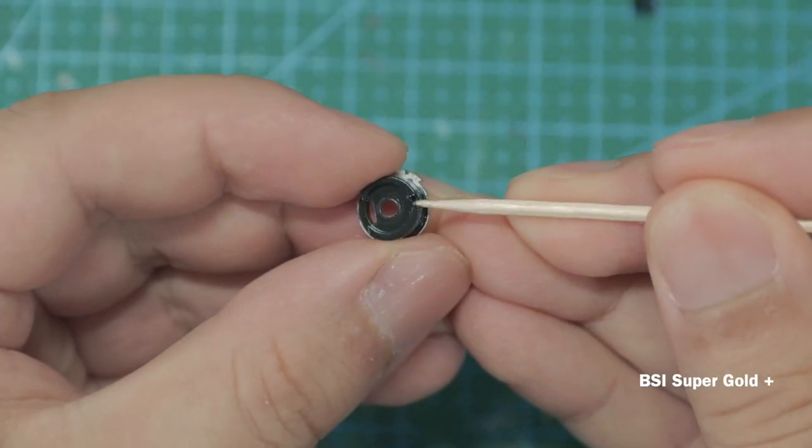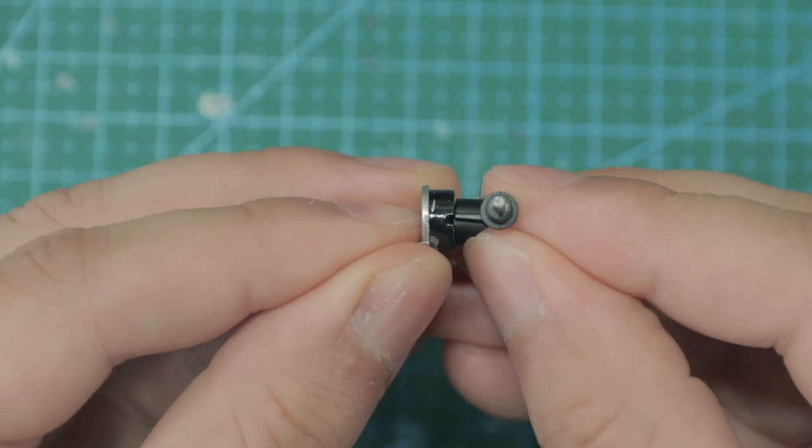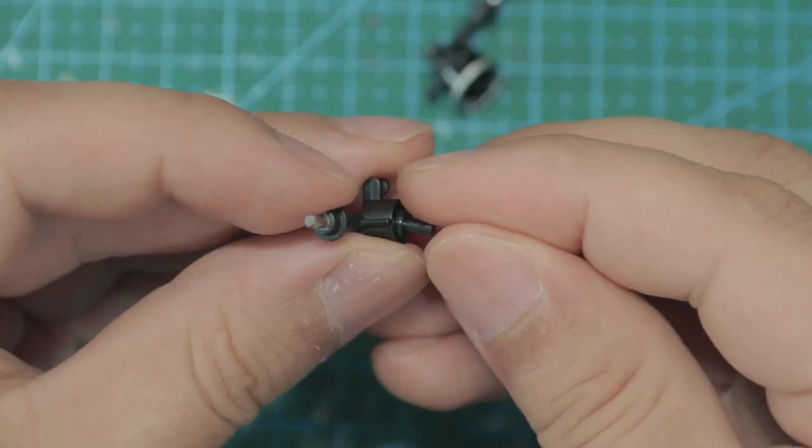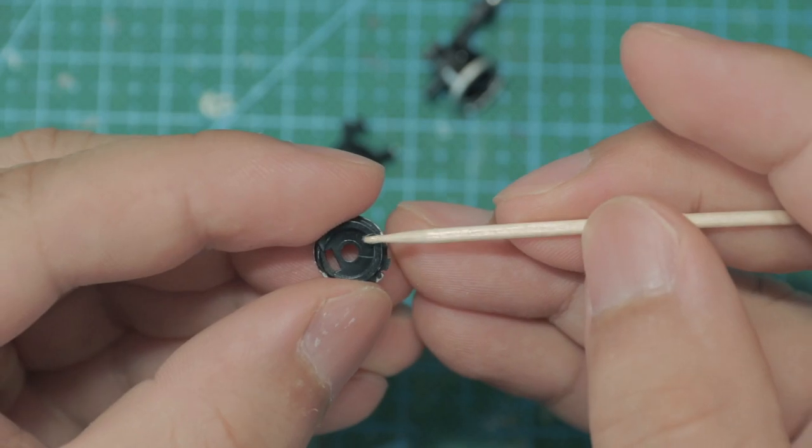So after all the parts have been painted and ready to go, I grab my favorite super glue and start putting everything together starting with the suspension.